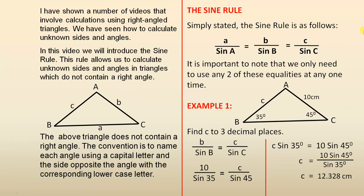The sine rule. Simply stated, the sine rule is as follows: a over sine A equals b over sine B equals c over sine C. It is important to note that we only need to use any two of these equalities at any one time.